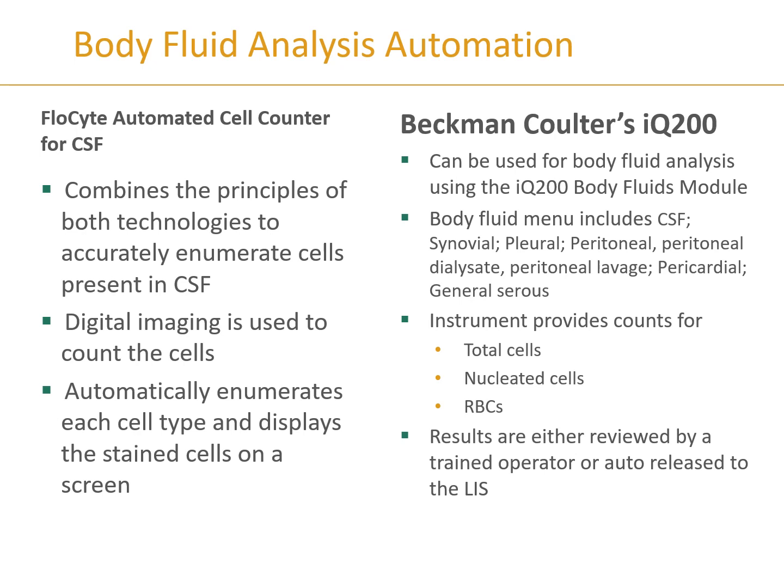Beckman Coulter can be used for body fluid analysis and has been approved for CSF, synovial, pleural, peritoneal, peritoneal dialysate, peritoneal lavage, pericardial, and serous fluid — a wide range of capabilities. The instrument provides total counts and nucleated cells including white blood cells, epithelial cells, and any nucleated elements, as well as red blood cell counts. The operator can review the cells and counts, or it can be set up to automatically auto-verify results to the LIS.